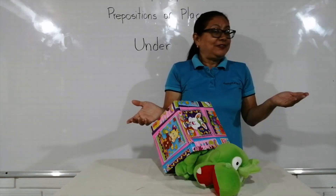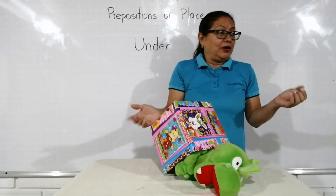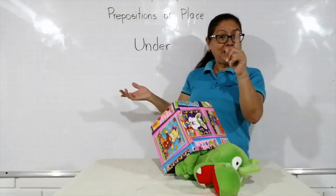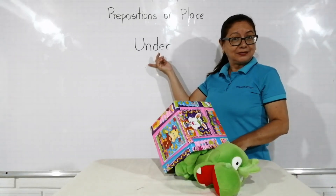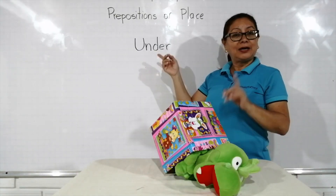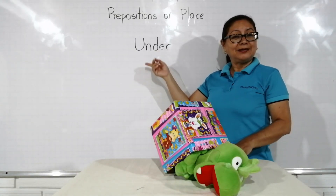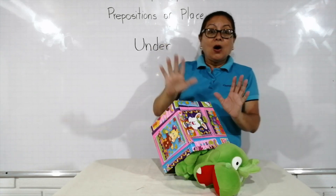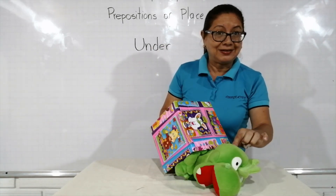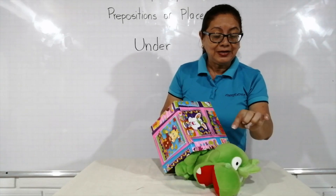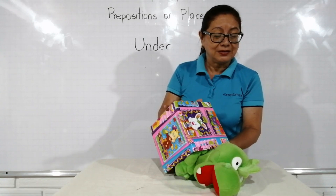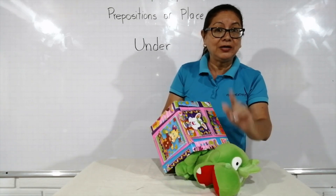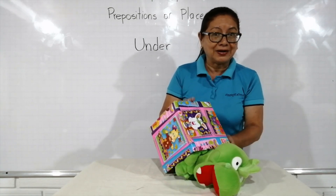Where is Mr. Dragon? Repeat: under. Under. Oh, look — Mr. Dragon is under the box. Mr. Dragon is under the box.